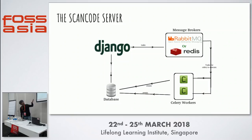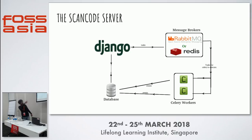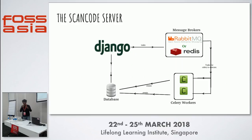This is basically the architecture of the ScanCode Server. You have a Django server; data goes into the server part and is divided into multiple chunks. Using Redis servers, the data is collected as JSON, scheduled by Celery workers. The Celery workers combine everything together, give back the whole response, and all responses are fed into the database.